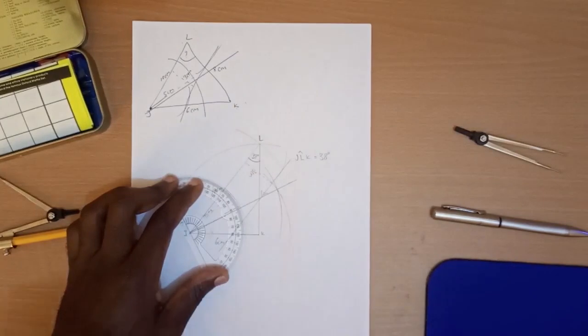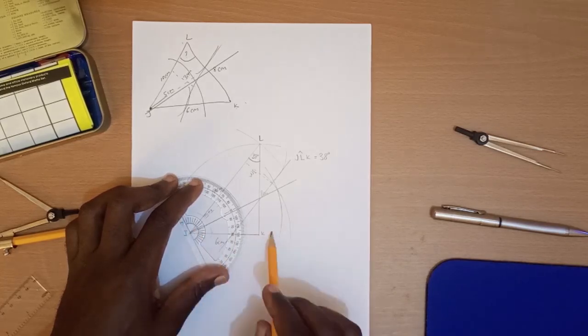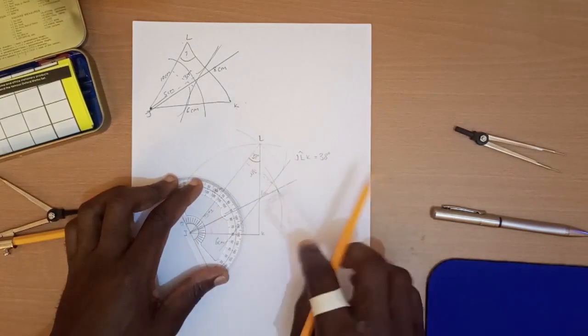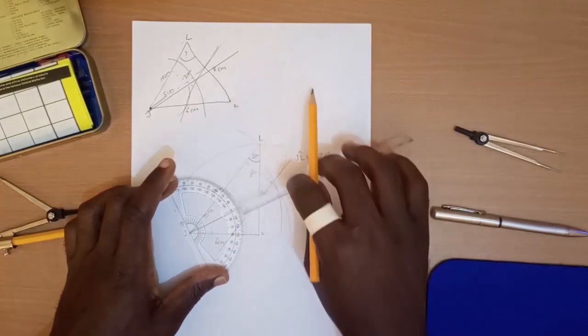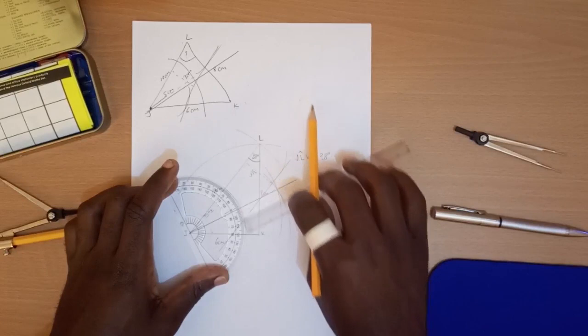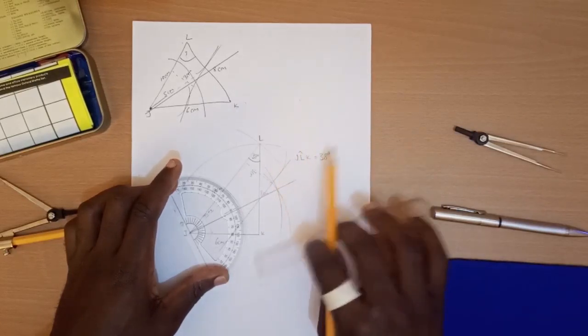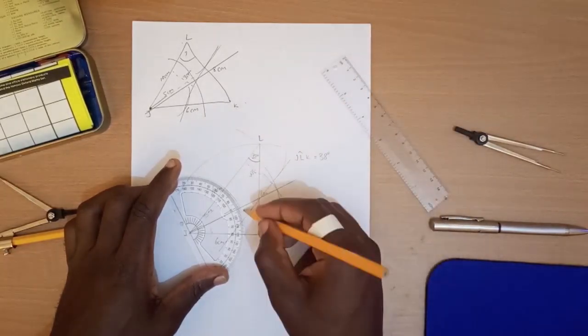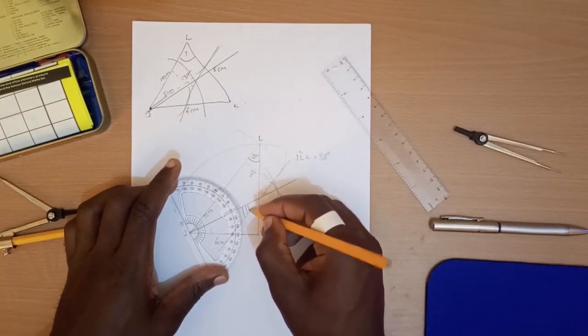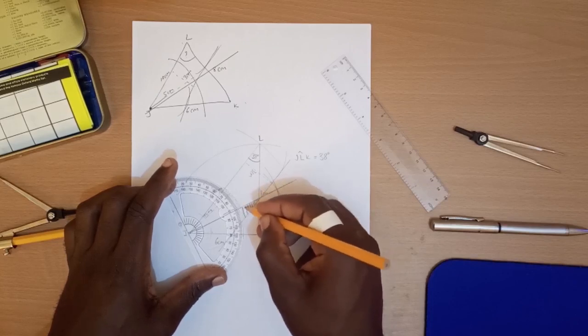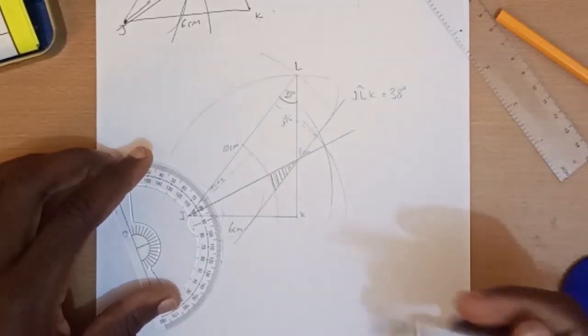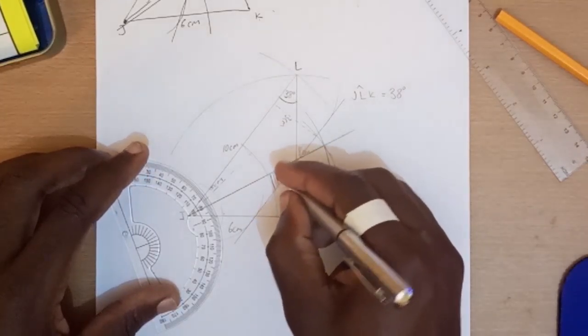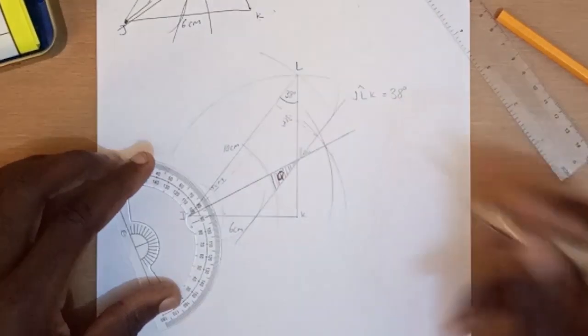And the last condition is that it is nearer to JK than JL. This is the line representing the equidistance of JK and JL. We're told it's nearer to JK. If it's nearer to JK, then the only area which remains is this one. This is the only area that satisfies the conditions which we have been given. So this small area is the one which we are going to refer to as our point Q. That shall be our point Q.